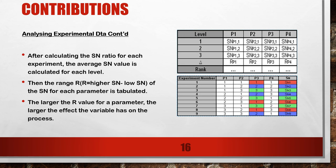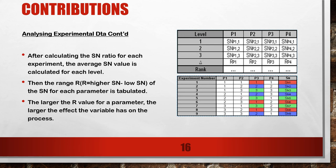After calculating the SN ratio for each experiment, the average SN value is calculated for each level. Then, the range (R) of the SN for each parameter is calculated. The larger the R value for a parameter, the larger the effect the variable has on the process.